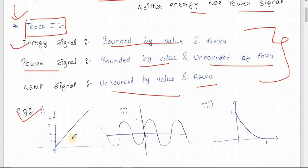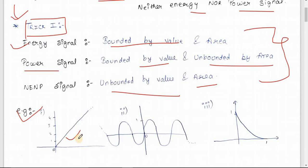In this first example, the signal is a ramp signal where the amplitude keeps on increasing and the area is also not finite. It is unbounded by value as well as unbounded by area, so this signal will be neither energy nor power signal.